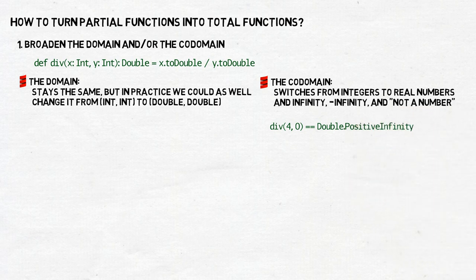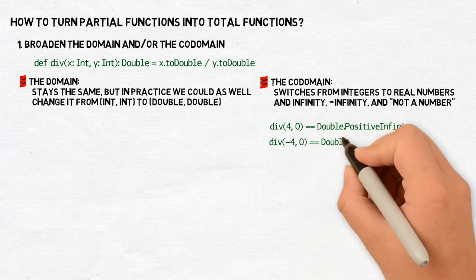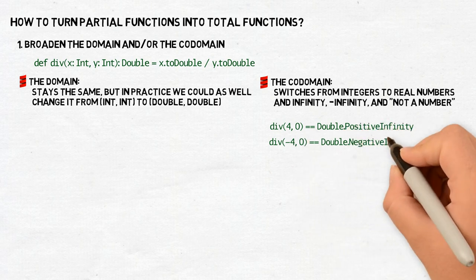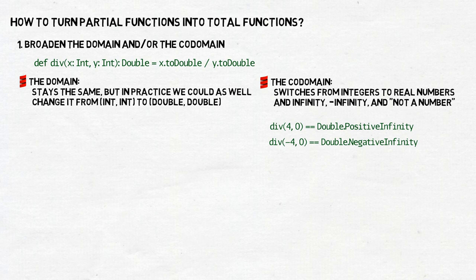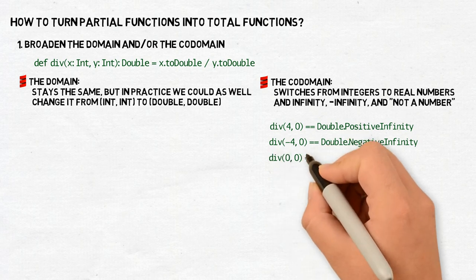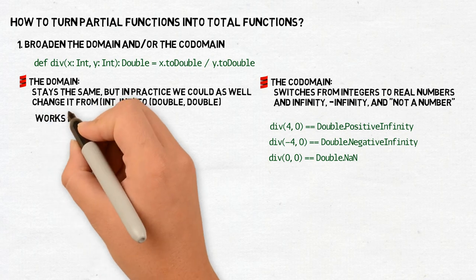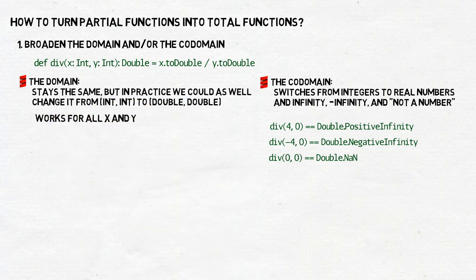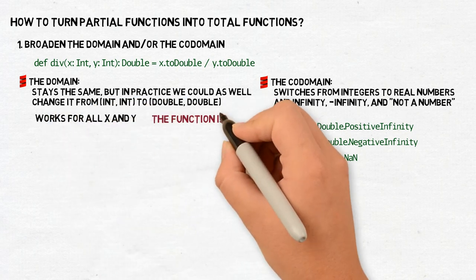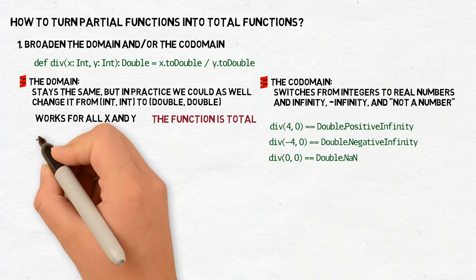If y is equal to zero and x is larger than zero, we will get infinity as the result. Similarly, if x is smaller than zero, we will get minus infinity. And if x is equal to zero, we will get not a number. That virtually solves all our problems, but it also forces us to deal with a result type that is more flexible than that what we might have wanted.